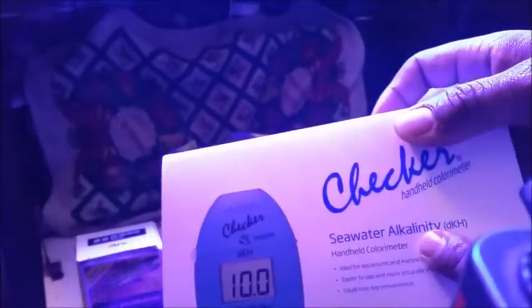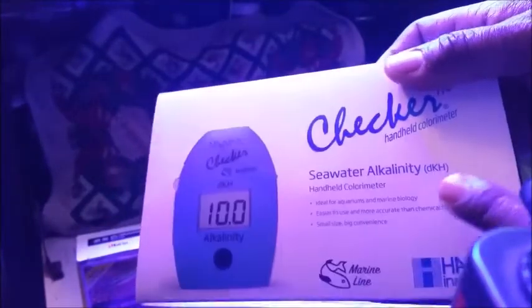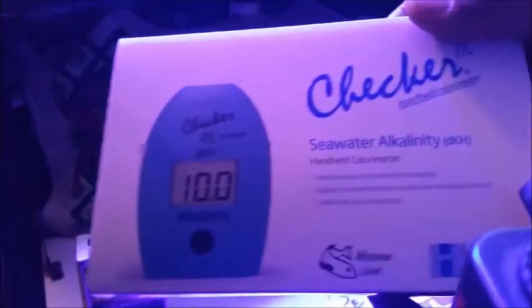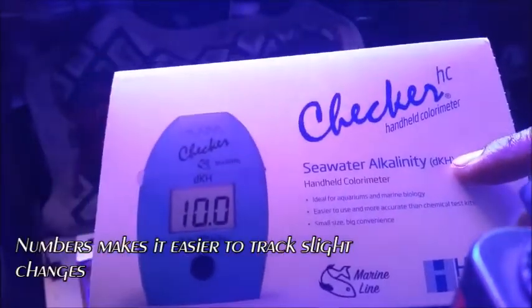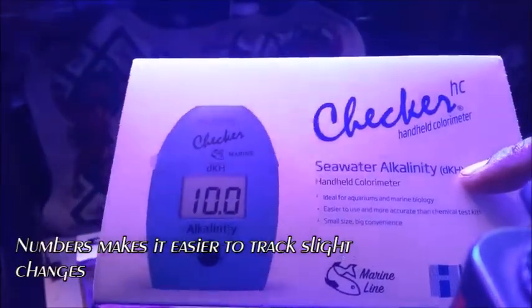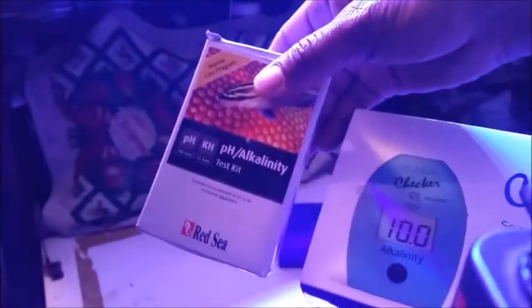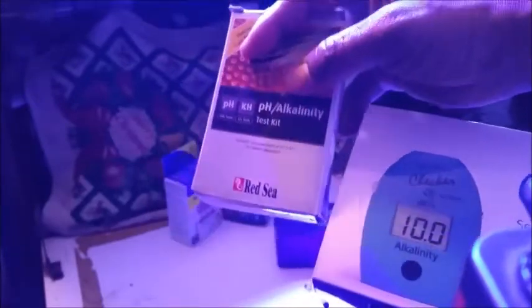If you want to go a little further and spend a few bucks, you cannot go wrong by using the Hanna checker. The Hanna checker tests specifically for alkalinity. I like it because it gives you a number. I can write the number down on a piece of paper and I can track it down to the decimal point, whereas the Red Sea you have to match the color and the color can be a little more tricky to monitor.